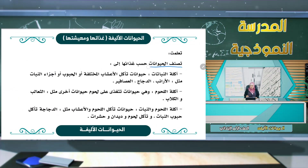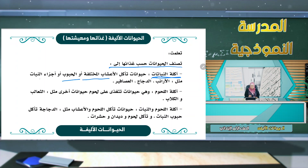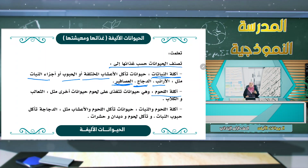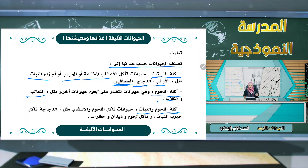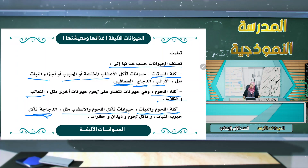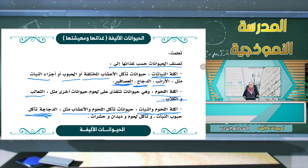نصنف الحيوانات حسب غذائها: أولاً آكلة النباتات - حيوانات تأكل الأعشاب أو الحبوب أو أجزاء النبات مثل الأرانب والدجاج والعصافير. ثانياً آكلة اللحوم - حيوانات تتغذى على لحوم حيوانات أخرى كالثعلب والكلاب والقطة. ثالثاً آكلة اللحوم والنبات معاً - مثل الدجاجة التي تأكل حبوب النبات والديدان والحشرات.